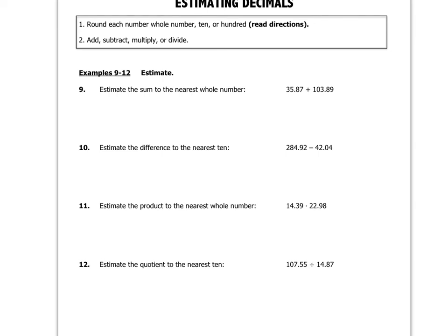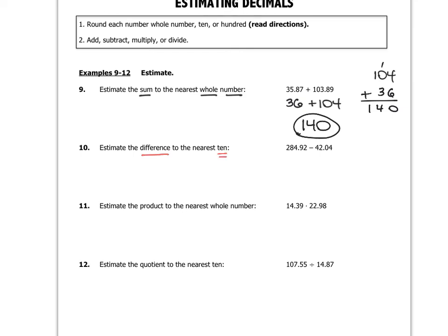For number 9, we're estimating the sum to the nearest whole number. 35.87 rounded to the nearest whole is 36, and 103.89 rounded to the nearest whole is 104. So 36 plus 104 gives an approximate answer of 140. For number 10, we're estimating the difference to the nearest tens place. 284.92 becomes 280 and 42.04 becomes 40. 280 minus 40 is 240.